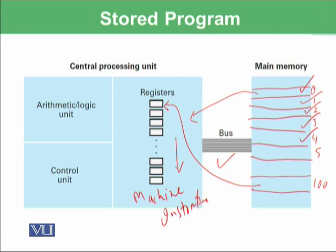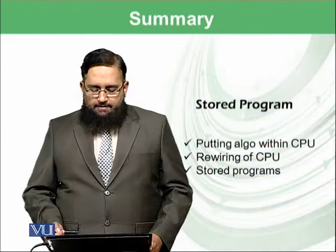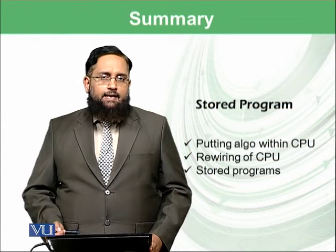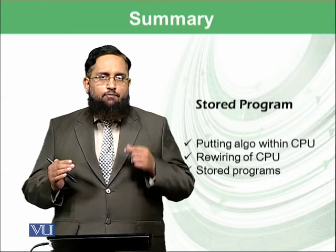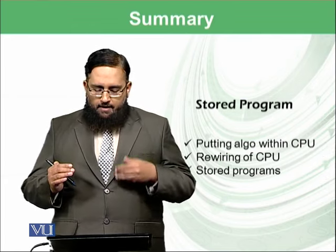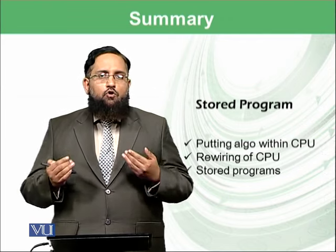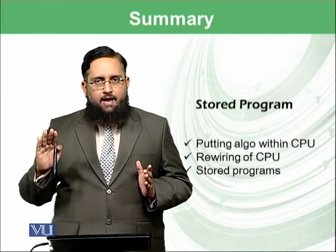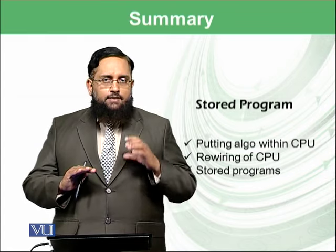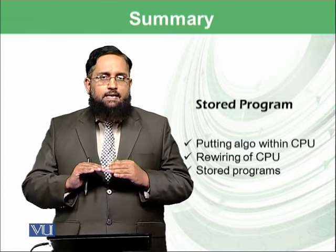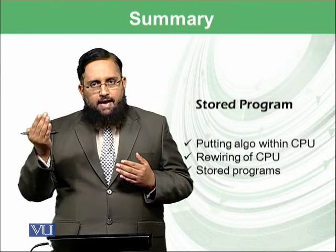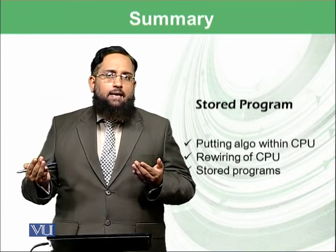So rather than only storing data in main memory, we are also going to store the machine instructions — the algorithmic steps of what needs to be performed. Today we discussed that previously computers were dedicated, with dedicated CPUs that could perform only one task. Then came the era of rewiring the CPU, and then the current era — the stored program era — where we store the program in RAM and the CPU decodes those instructions to determine what the computer should do. This makes a generic computer capable of performing multiple tasks.